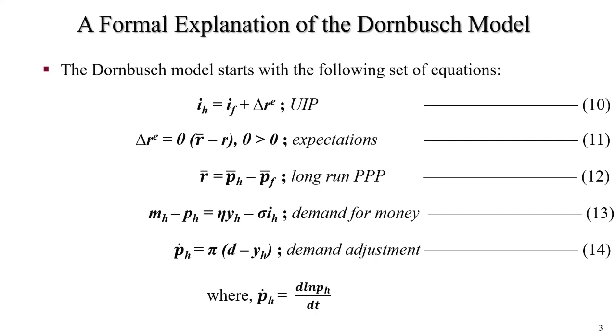Next equation, equation 12 represents a hypothesis that the long-run exchange rate is determined by PPP. Here, all variables are log of their long-run values. R bar equals P bar H minus P bar F. Here, P bar H is long-run price level of a reference commodity basket in home currency, and P bar F equals long-run price level of the same reference commodity basket in foreign currency.